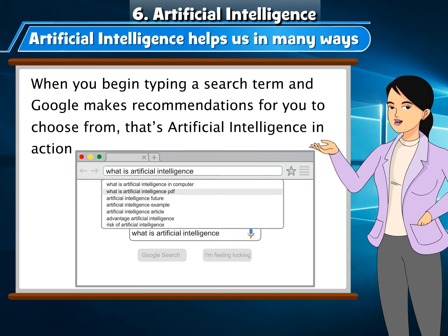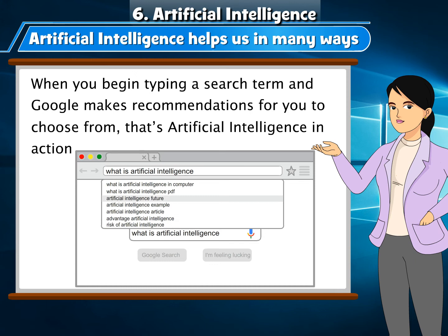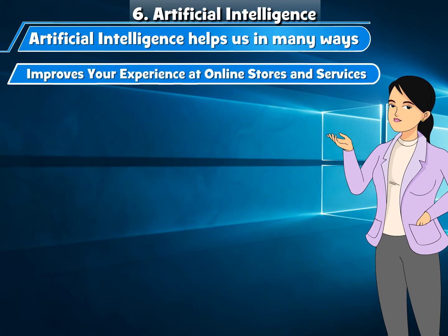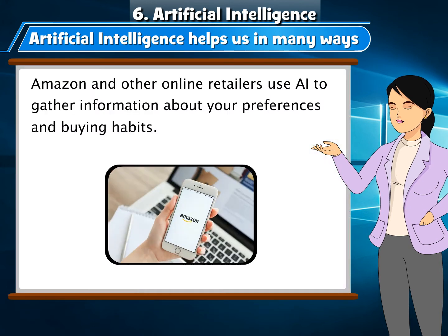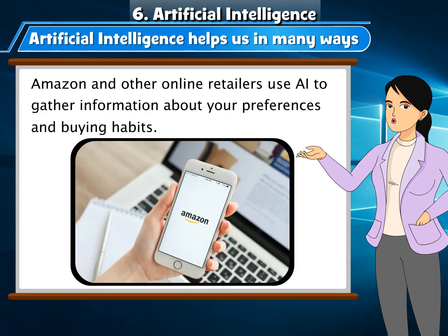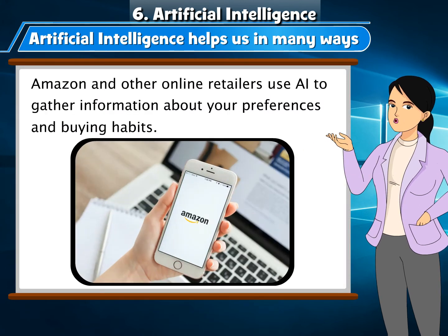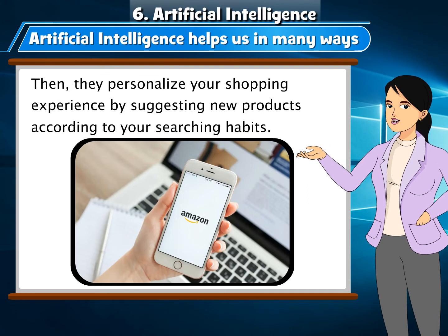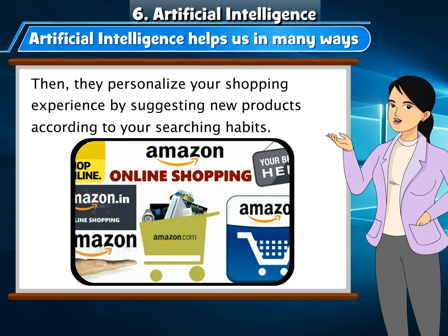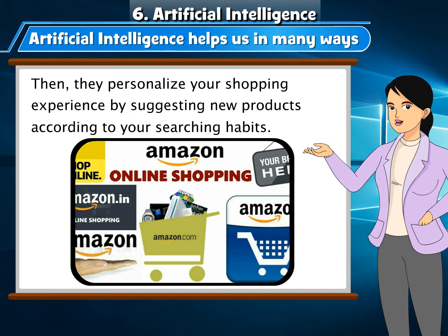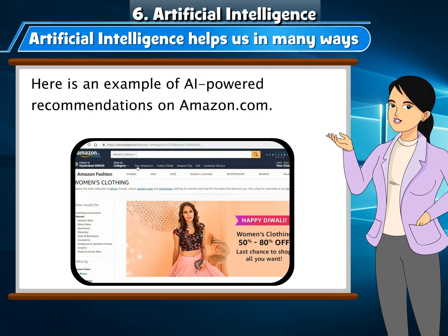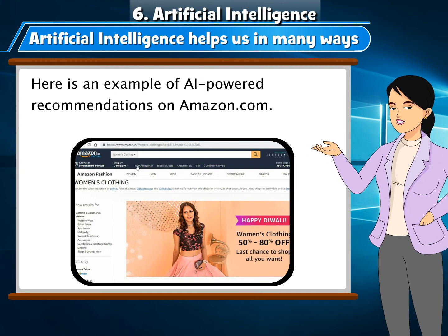Google Predictive Searches: When you begin typing a search term and Google makes recommendations for you to choose from, that's Artificial Intelligence in action. Improves your experience at online stores and services: Amazon and other online retailers use AI to gather information about your preferences and buying habits, then personalize your shopping experience by suggesting new products according to your searching habits.